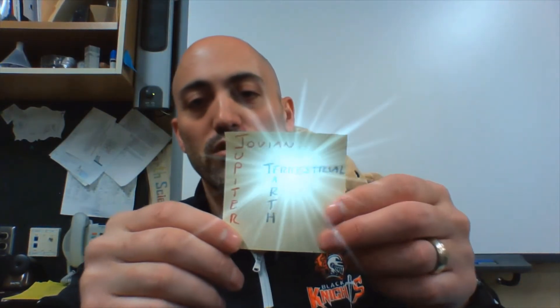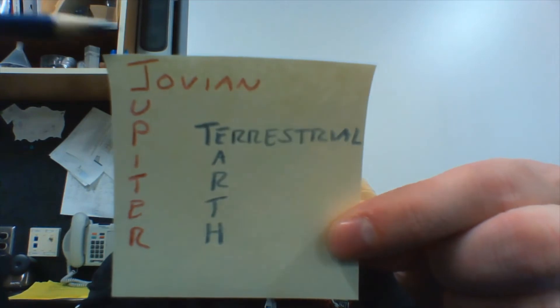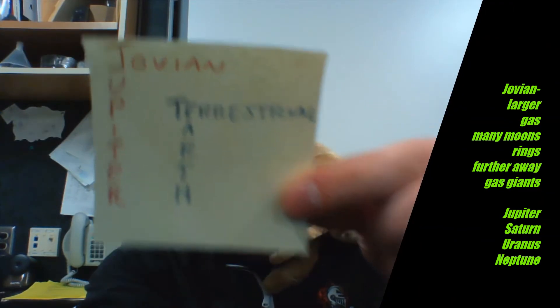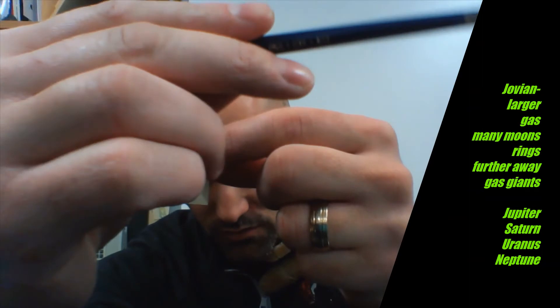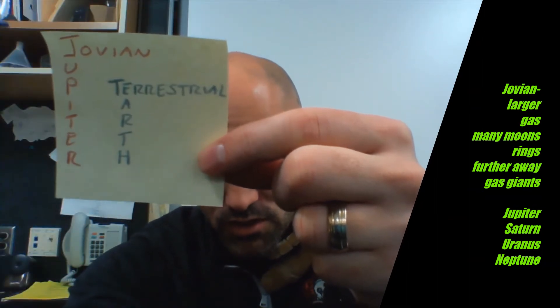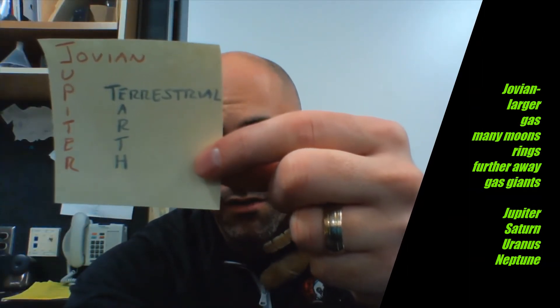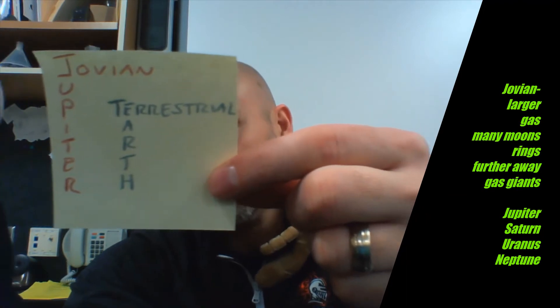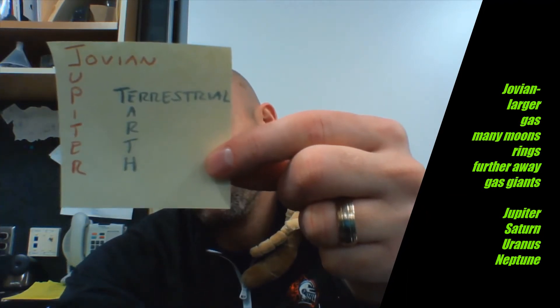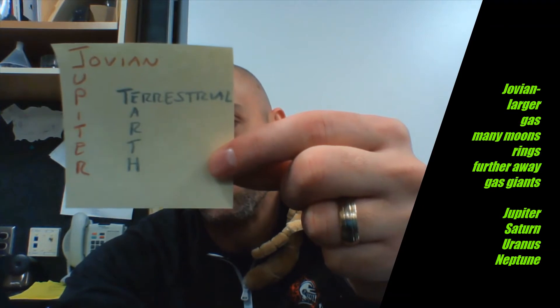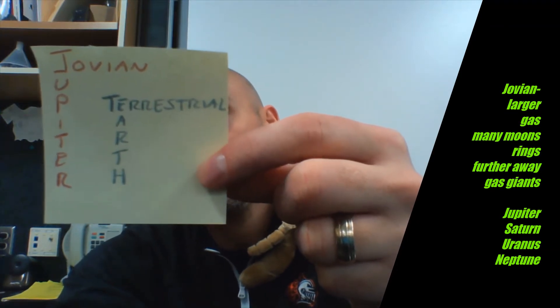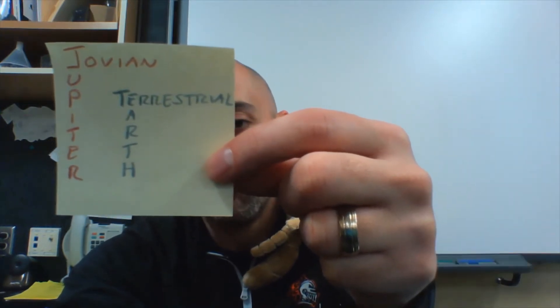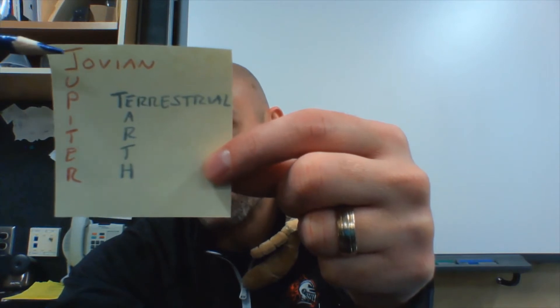Here's the second note — the different types of planets. There are really two types. You've got the Jovians — those are the Jupiter-like planets. The Jovians are bigger, gassy, they have a lot of moons, and sometimes they have rings. They're the outermost planets and they have a very low density. Look at your planet chart in your reference table whenever they ask questions about the different planets.